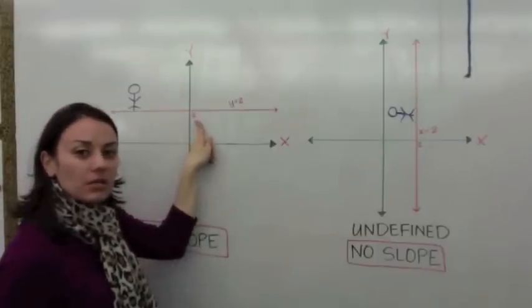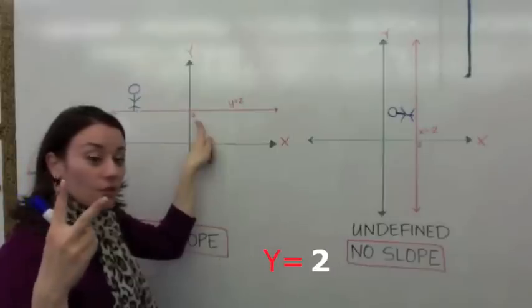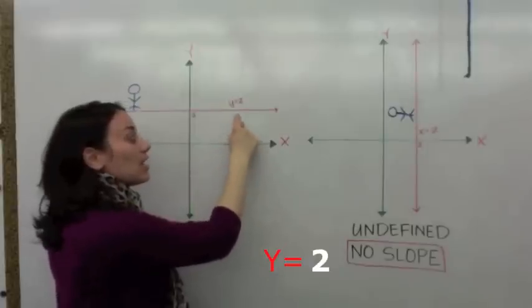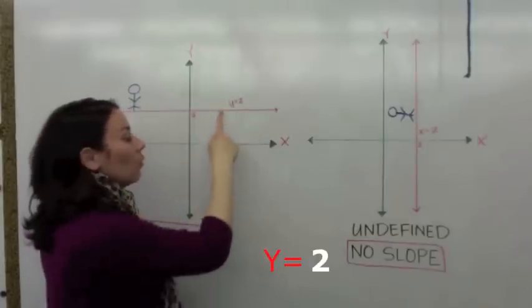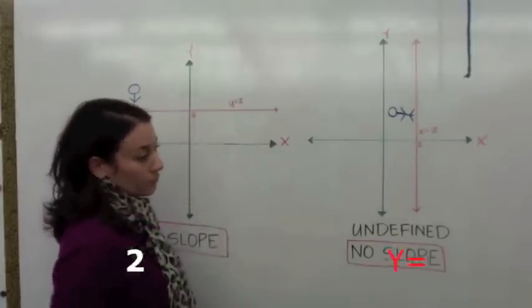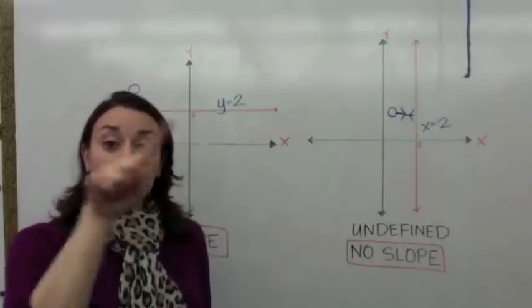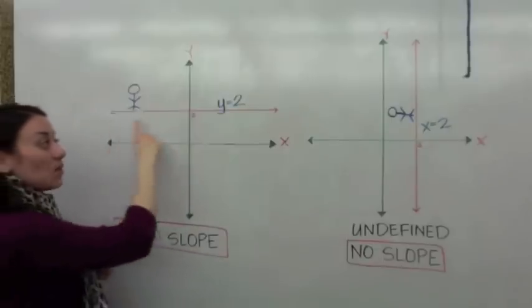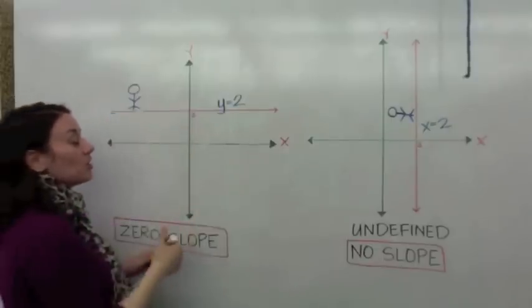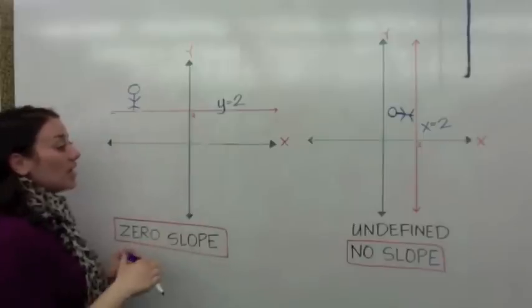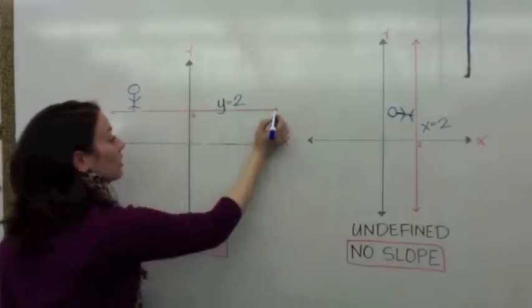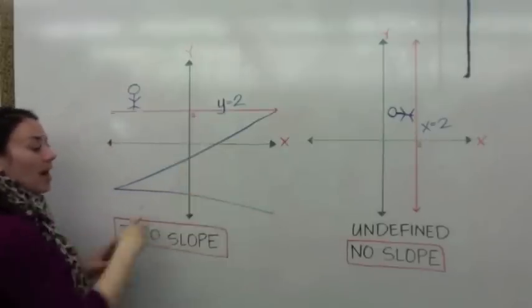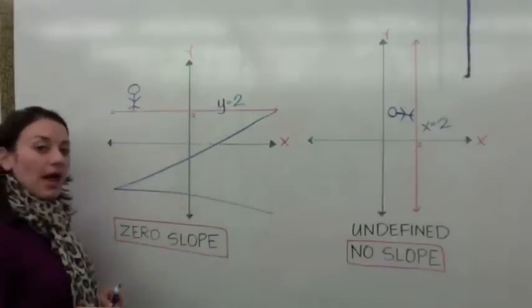If it goes through the y-axis on one of the y-intercepts, what is the intercept? It's 2. We say that this line is y equals 2. We're going to remember zero slope by making a Z with a line — so if you have a horizontal line, like Zorro, you can make a Z for zero.